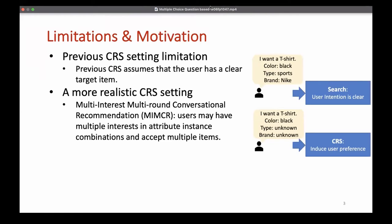As a result, we first propose a more realistic conversational recommendation learning setting, namely multi-interest, multi-round conversational recommendation, MIMCR. Specifically, the user may have a clear single preference for some attribute types, such as a bright color or type. While for other attribute types, the user may have multiple preferences or even no clear preferences, which leads to multiple acceptable attribute instances of one attribute type.